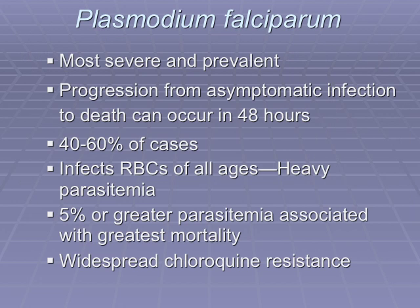Focusing on Plasmodium falciparum — this is the most severe and prevalent form of malaria, and the species where you can progress from asymptomatic infection to death in as little as 48 hours. Suspicion of falciparum malaria should prompt treatment immediately, because waiting may mean starting therapy too late. What's distinct about Plasmodium falciparum is that it infects RBCs at all stages, whereas other malaria strains only infect certain stages of the RBC maturation cycle. The greatest mortality is associated with parasitemia of 5% or greater, and there is widespread chloroquine resistance among falciparum malaria.